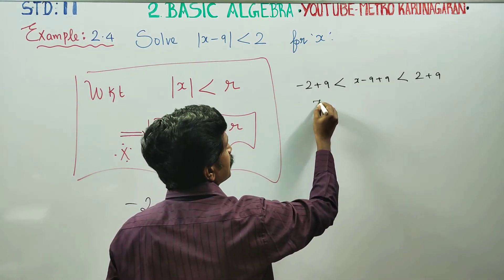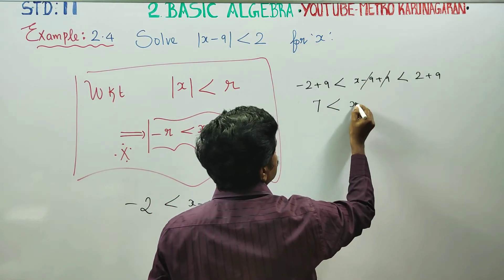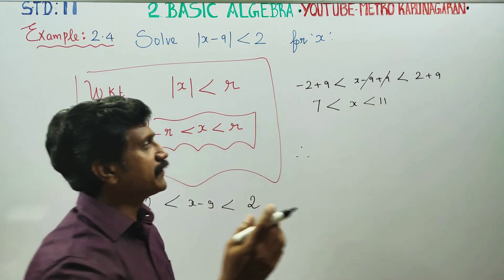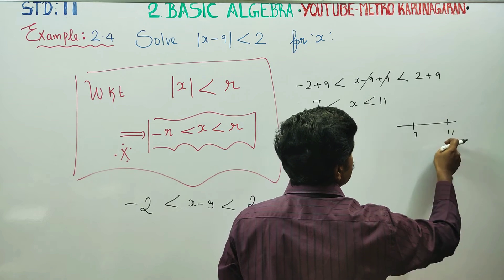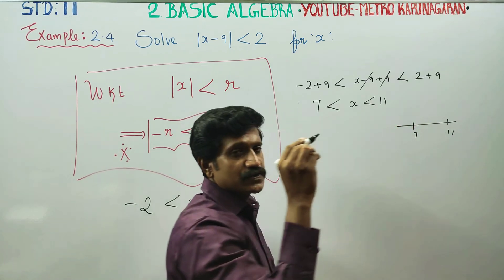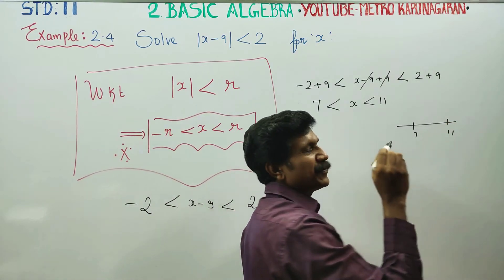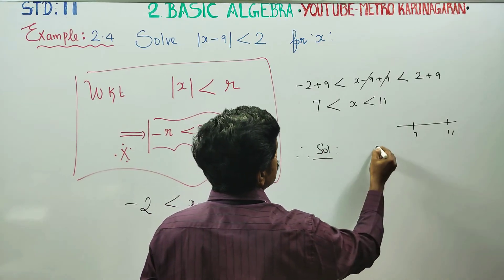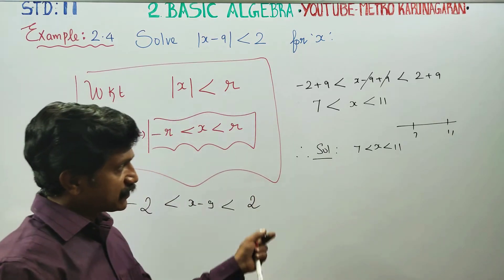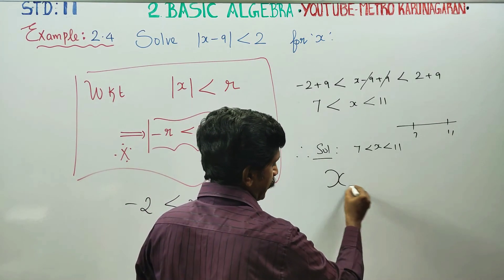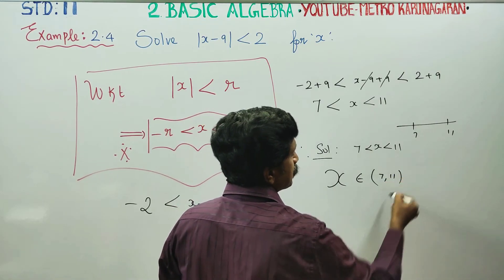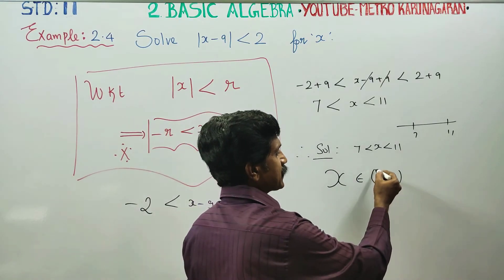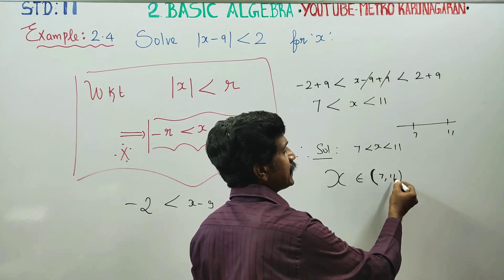So we get 7 less than x less than 11. The x-minus-9 terms cancel. X lies between 7 and 11. This is the open interval (7, 11). The values 7 and 11 are not included — 7 is not included, 11 is not included.